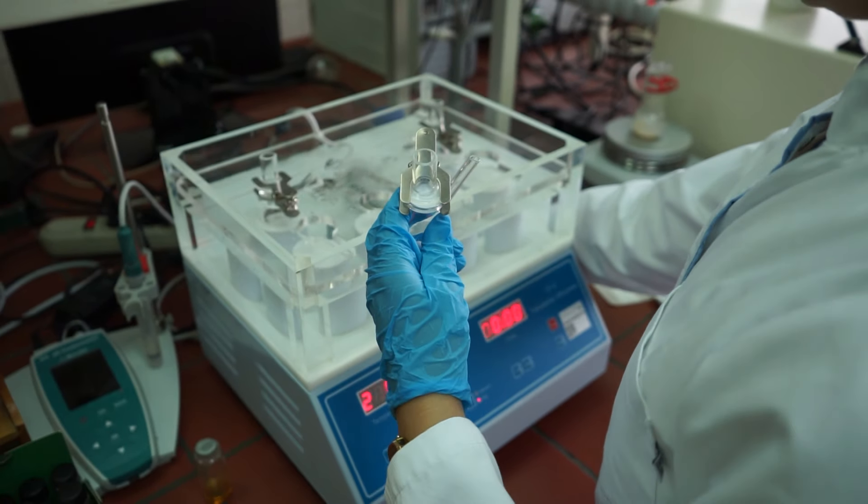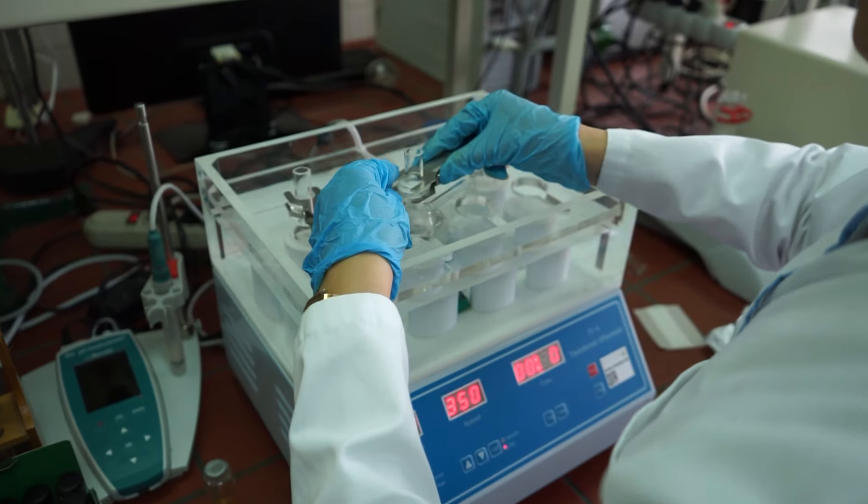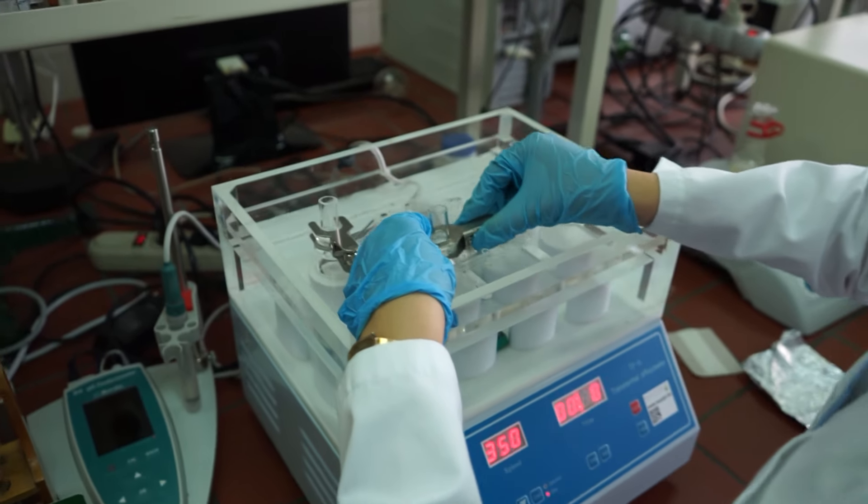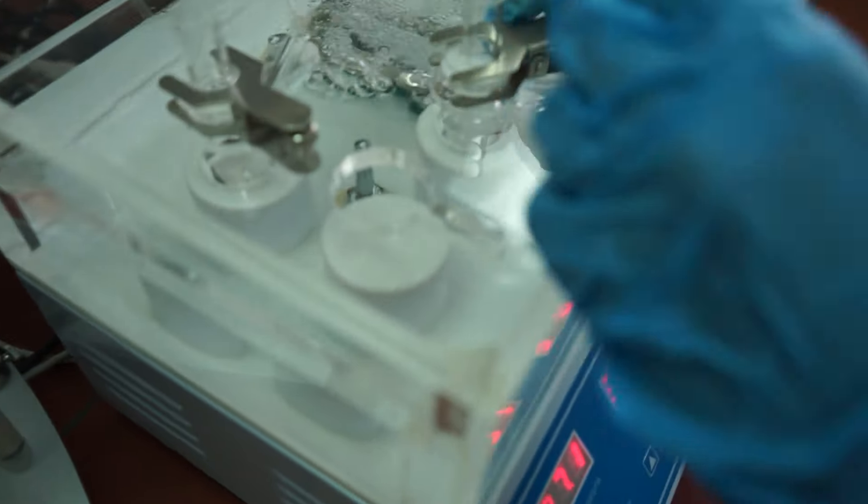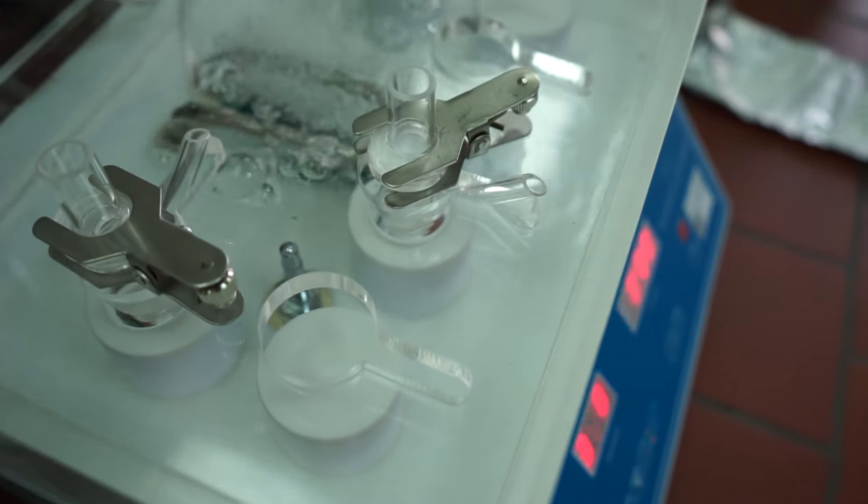Šta su to ionske tečnosti? Ionske tečnosti su soli koje se tope ispod 100 stepeni. Mi najviše volimo te soli - ionske tečnosti koje se tope na sobnoj temperaturi, koje su tečne na sobnoj temperaturi.